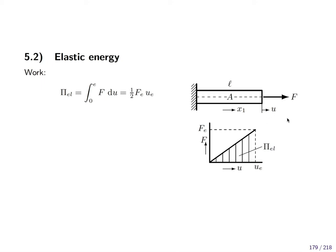The force itself and the displacement follow a linear relationship — that is what linear elasticity is about. The force-displacement law is linear, and the work or energy is calculated as the integral under this curve. The dashed area is the total elastic work. Integrating over u and inserting F, which is proportional to u, gives an integral over u du, which yields one-half u squared. That is simple integration.